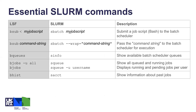For essential Slurm commands, the left column shows LSF commands commonly used for batch submission, viewing queues, and monitoring jobs, with the Slurm equivalent mapped alongside. The first command - how to submit a job to Slurm - is the sbatch command followed by your job script name. Slurm doesn't need a redirection less-than sign; it's directly the name of the job script. I usually encourage naming your job scripts with a .sbatch extension to differentiate which script is which and to remember which command to use.